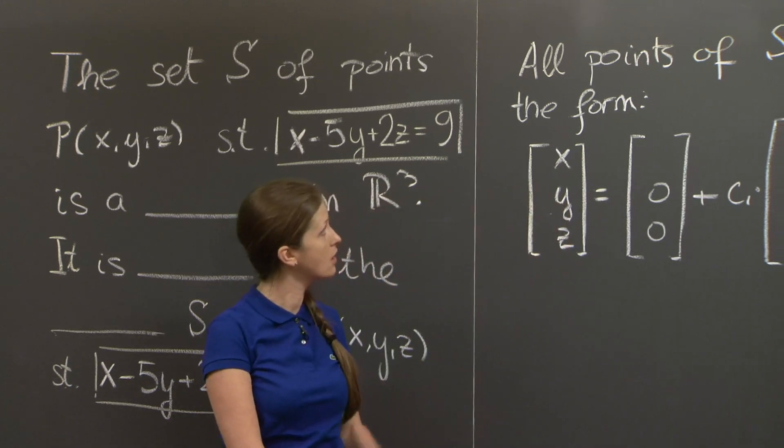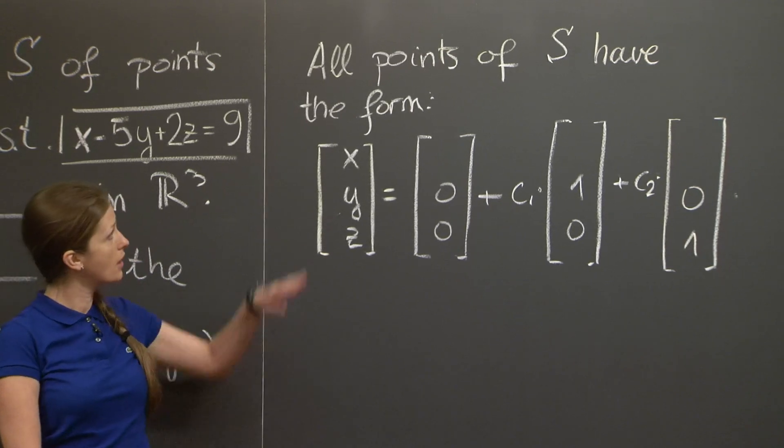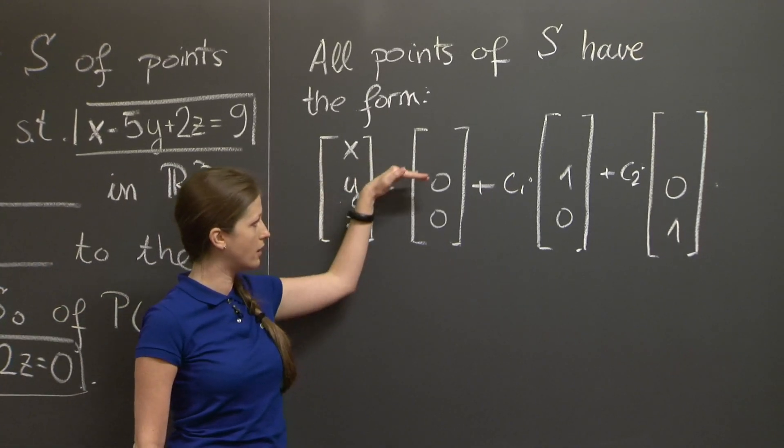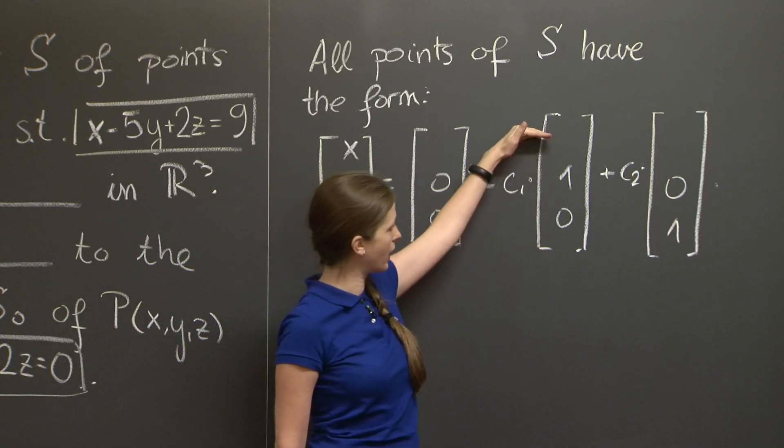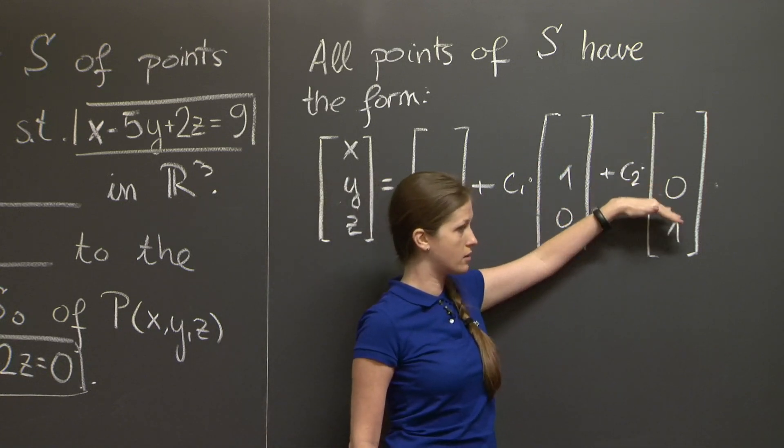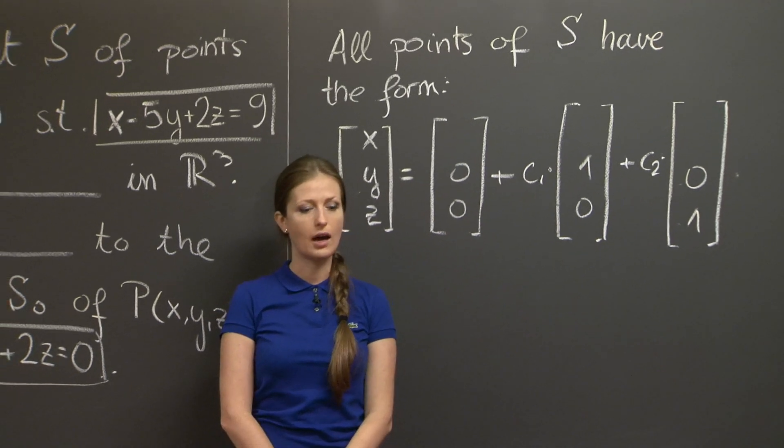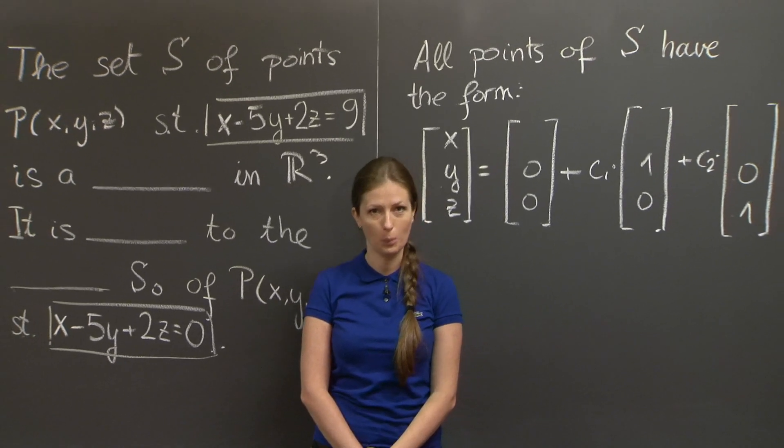After we solve this, we have the second part of the problem, which says all points of S have a specific form: (x, y, z) equals blank [0, 0] plus some parameter times blank [1, 0], plus some other parameter times blank [0, 1]. And we need to fill out all six blanks. Now you should pause the video, fill in the blanks, and then come back and see some pretty pictures that I prepared for you.